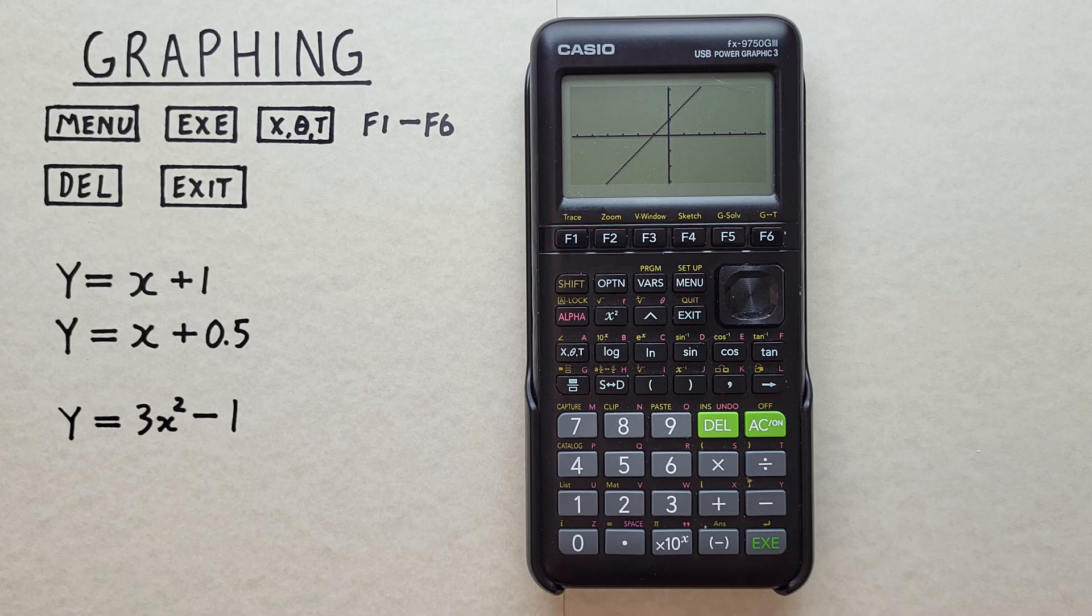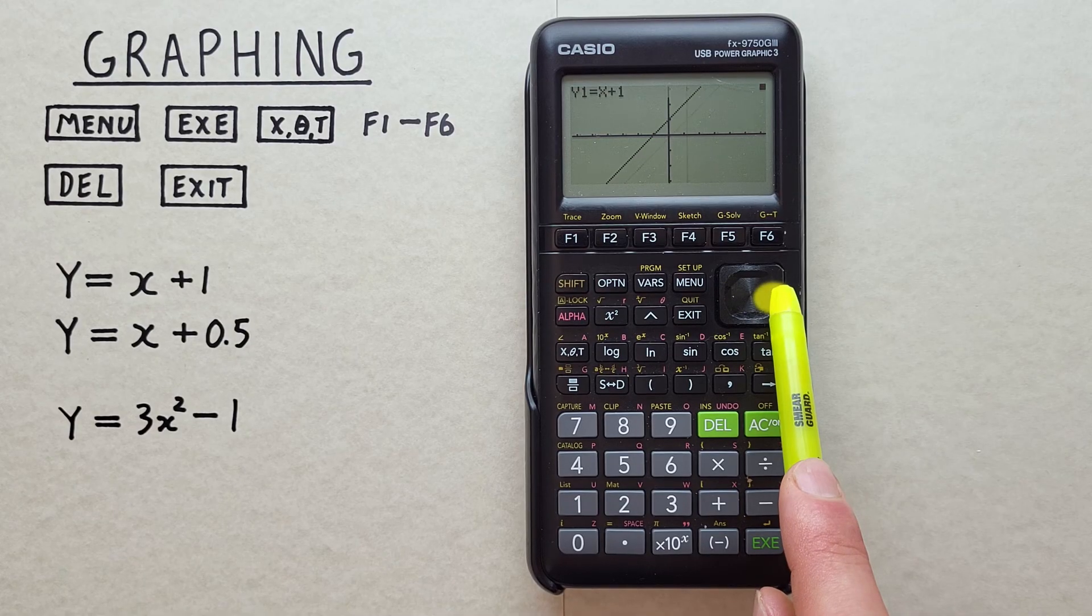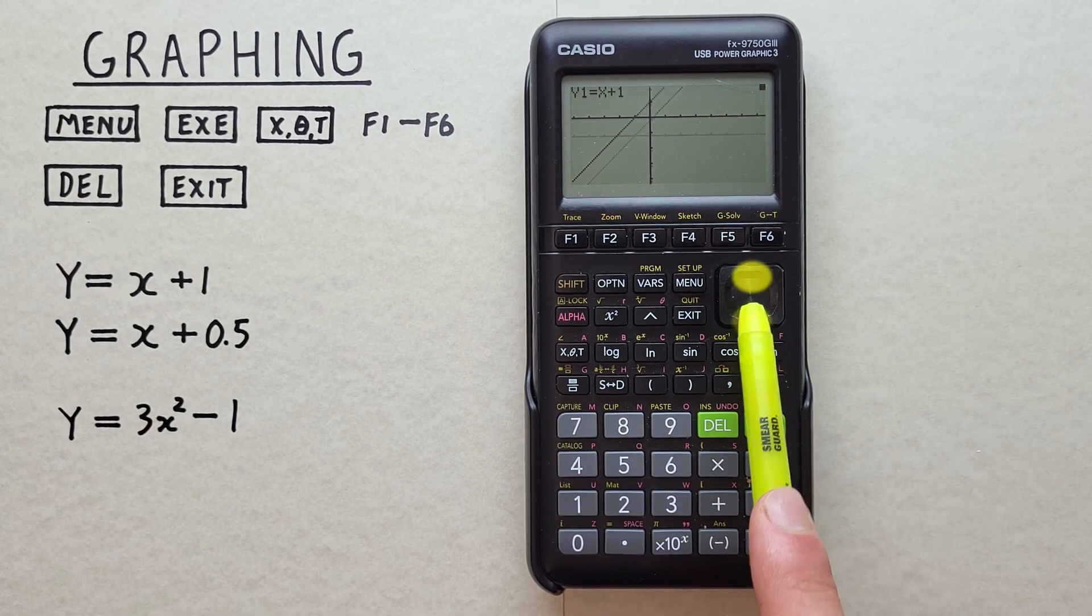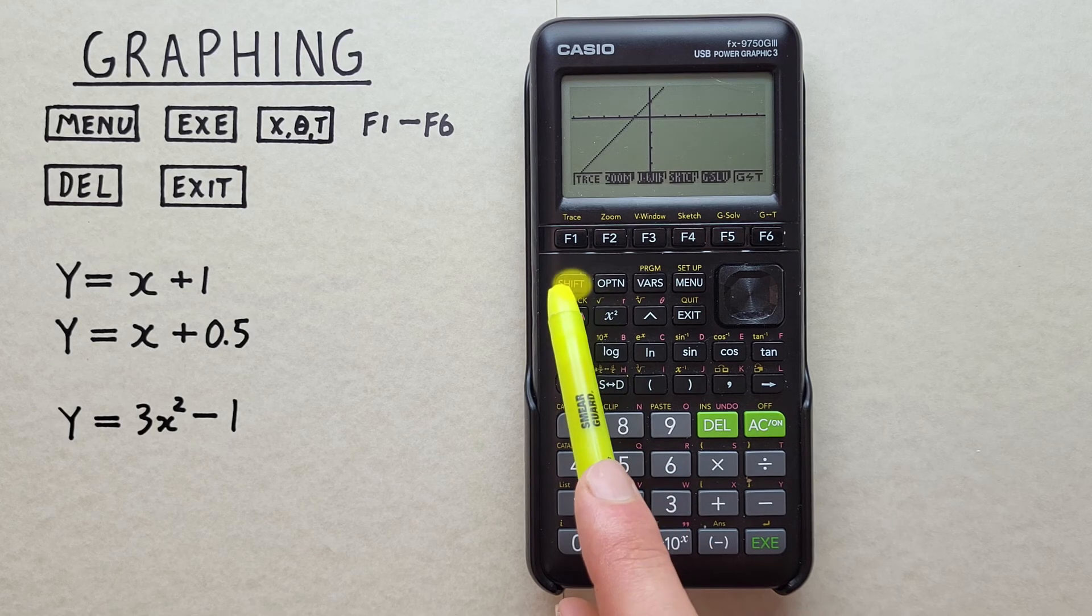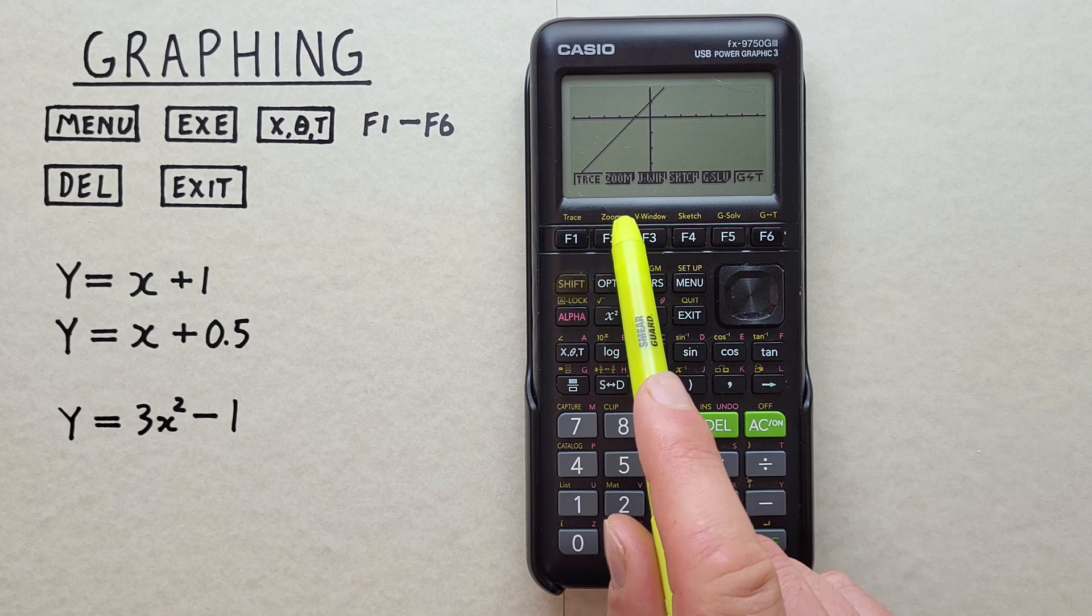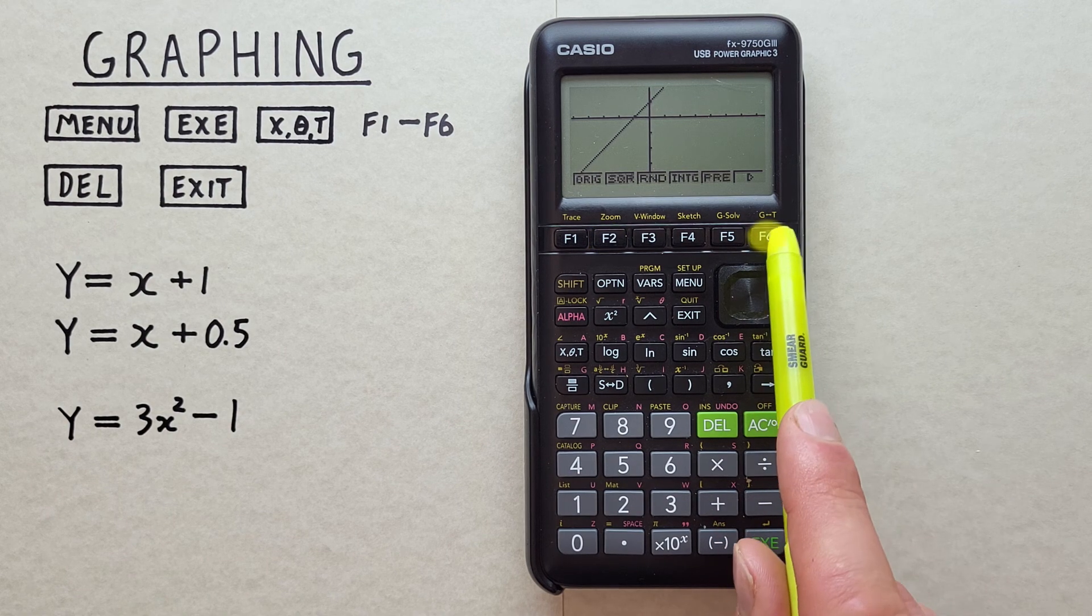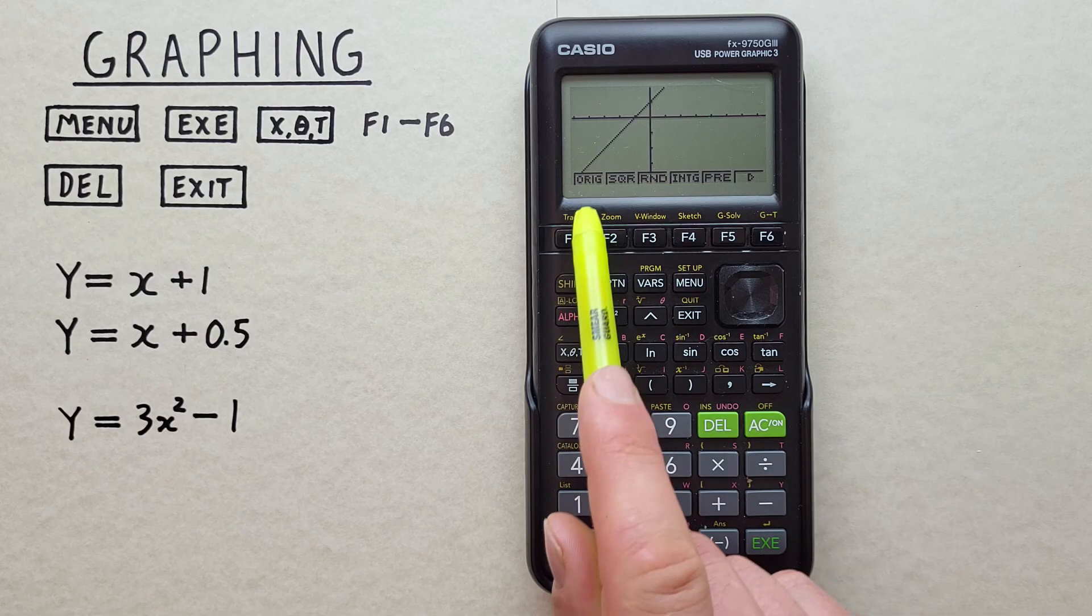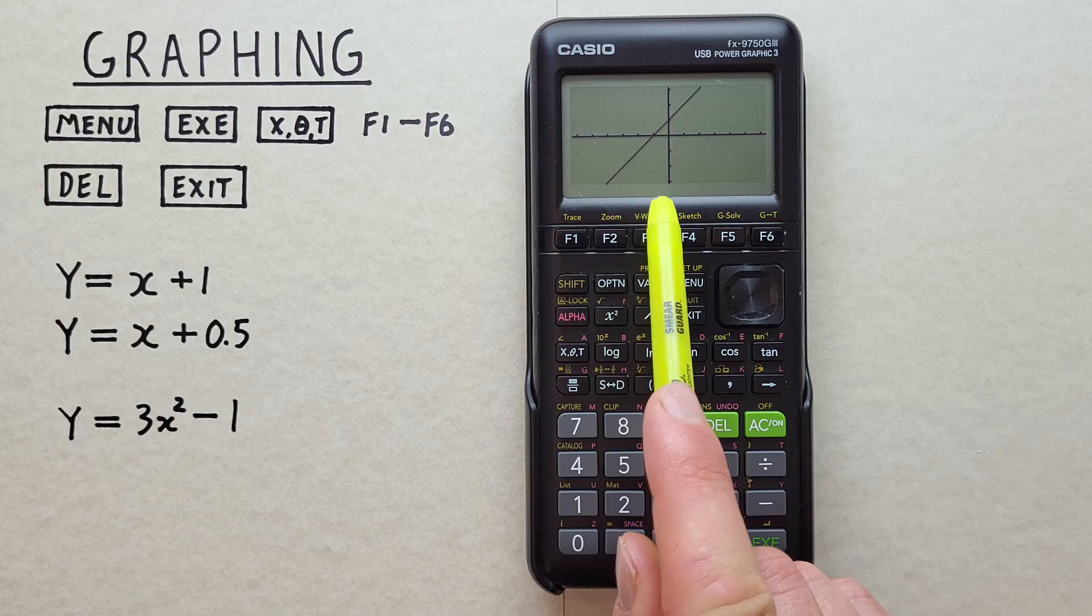We can move around on our graph by scrolling with the arrow keys, going left or right, up and down. And if we find we've scrolled away and want to go back to our original position, we can do that by pressing shift F2 for zoom, scroll to the right once with F6, and then choose F1 ORIG or original. And that brings us right back to our original position.